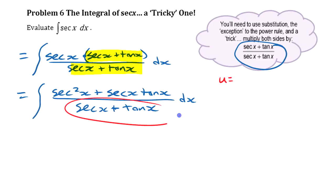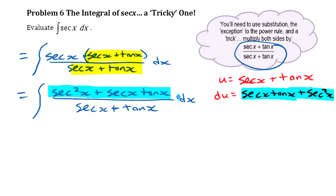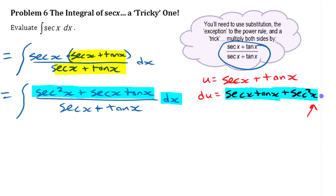The reason this works is that the substitution we're going to use is u equals secant x plus tan x — the expression on the bottom. Then du is the derivative of secant, which is secant tangent, plus the derivative of tan x, which is secant squared x. That's exactly what we have on top: secant squared x plus secant tangent x, the whole thing times dx.